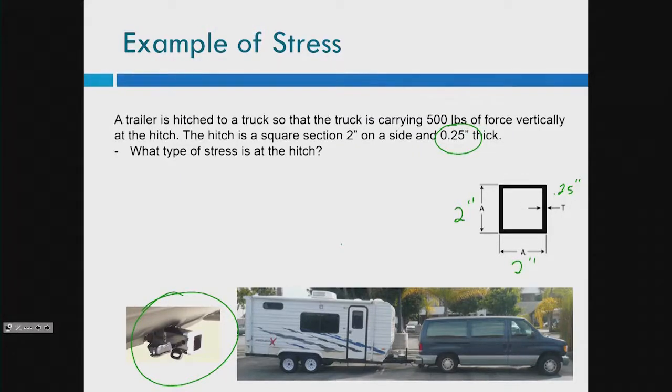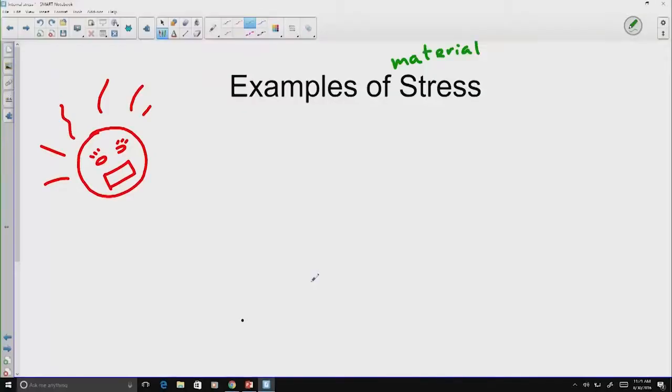So let's sketch my trailer here. My trailer has some wheels on it. It has the little hitch that's extending from it. And if we think about the free body diagram just roughly, we know we have some sort of weight of the trailer. The trailer is being held up by the wheels.